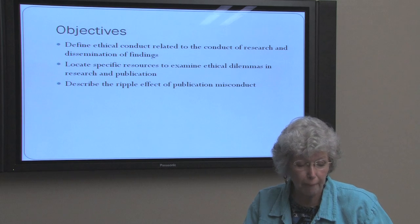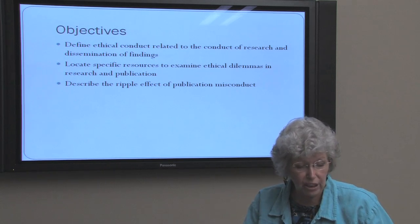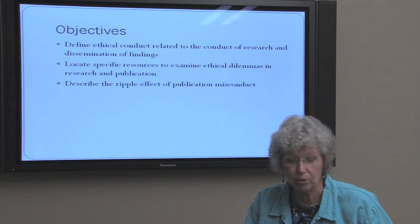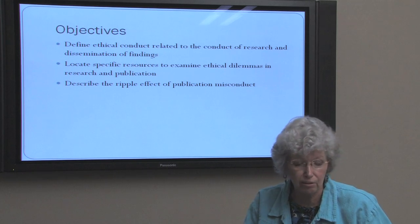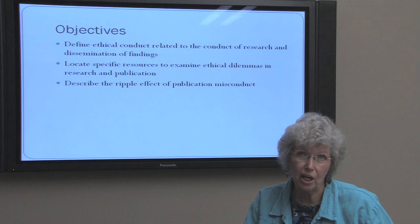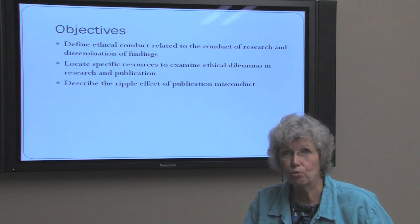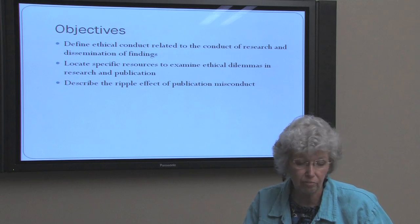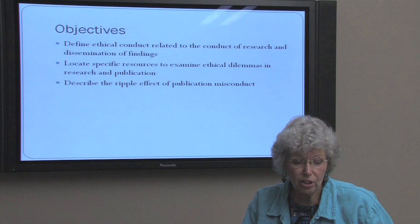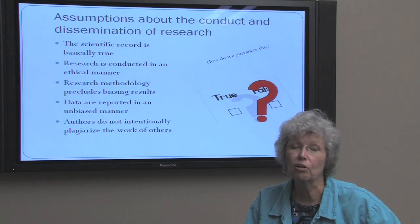First we're going to have an overview of the problem. The second module is going to discuss authorship issues. The third we're discussing plagiarism and how to avoid it. And four, conflicts of interest and transparency in publishing will be presented. And then the fifth and last module will be on publication misconduct and dealing with retracted literature. Our overall objectives here for this first part are to define some of these terms that we're going to be using, and also to share with you some resources. An important concept here is that there is a ripple effect of publication misconduct, and that's one of the themes that's going to be overarching in all of these presentations.